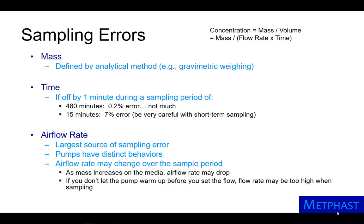Now let's look at the different sampling errors from these three key parameters. The error introduced by the mass of the hazard is primarily a function of the analytical method, such as gravimetric weighing in particulate sampling. The error introduced by time depends on the type of sampling you are conducting.